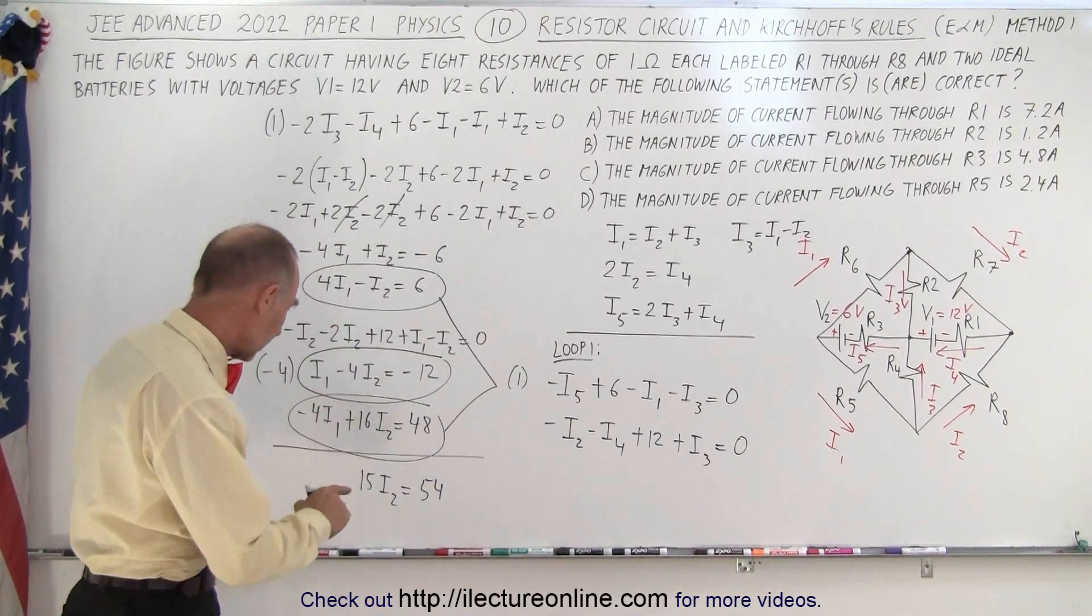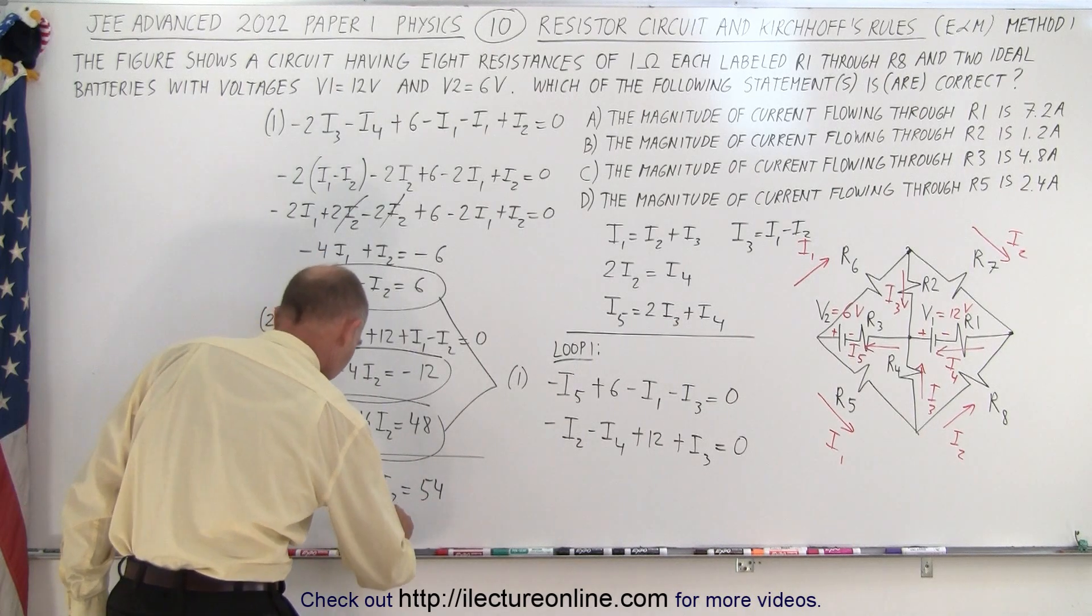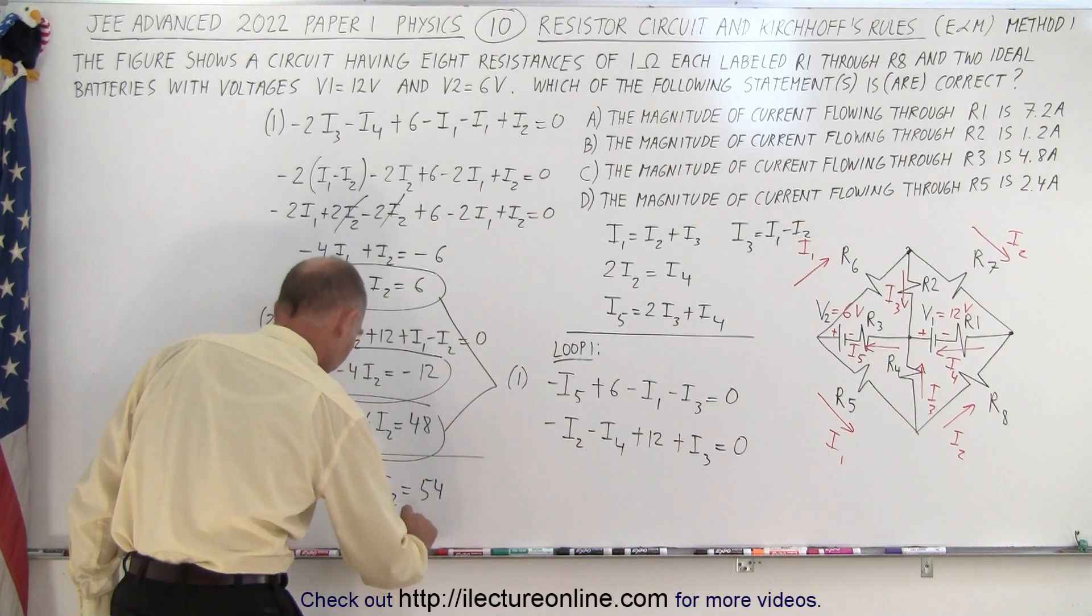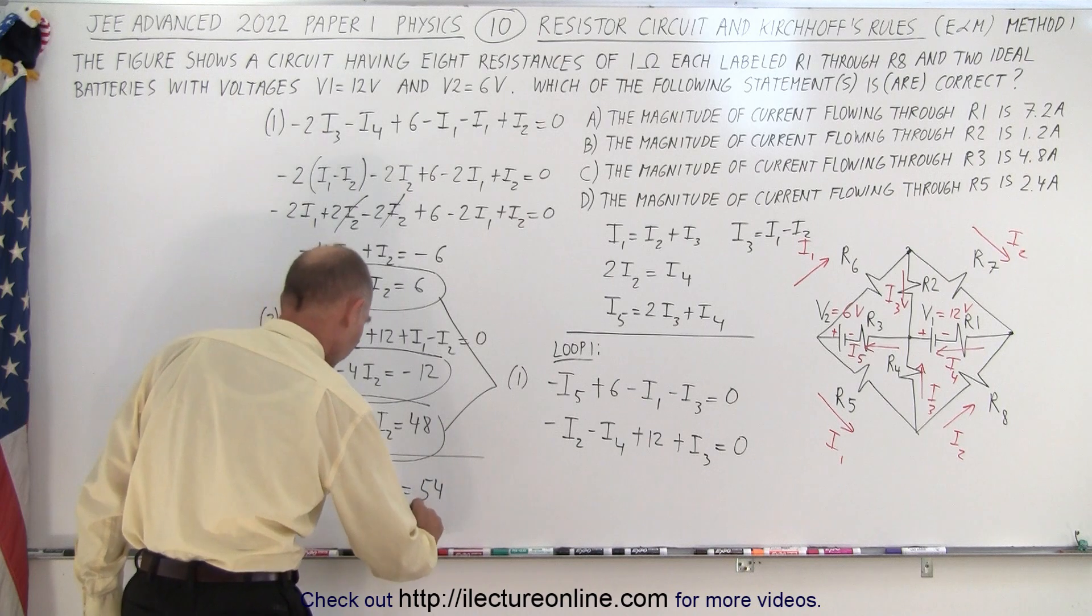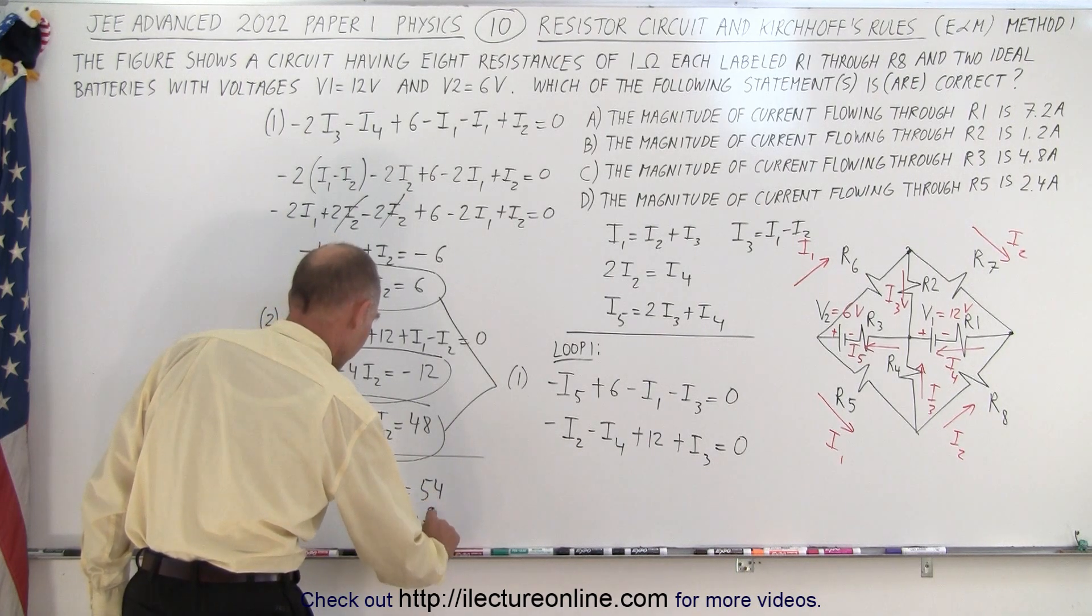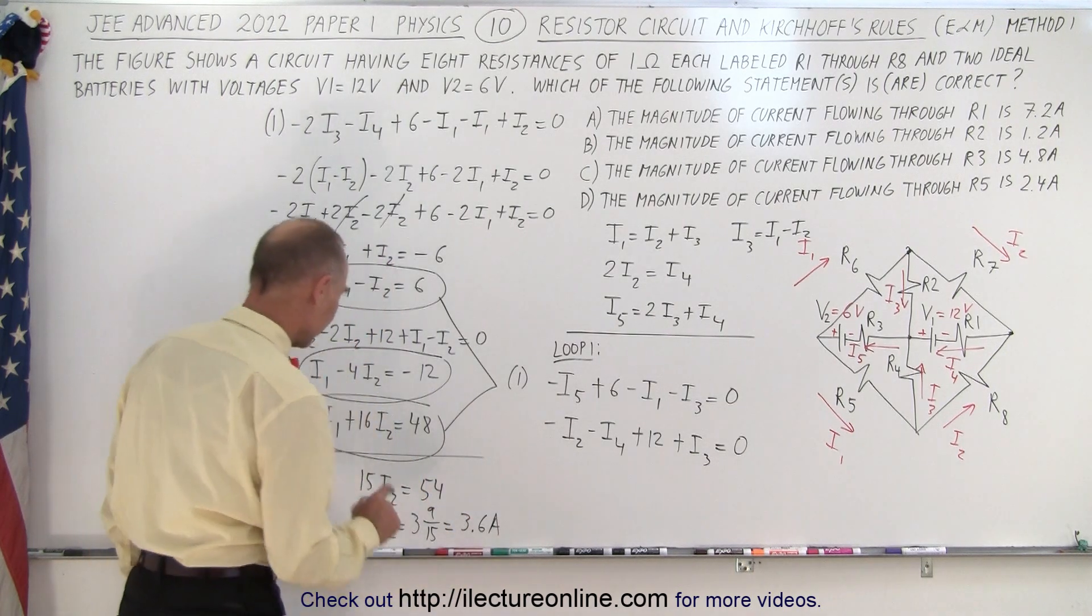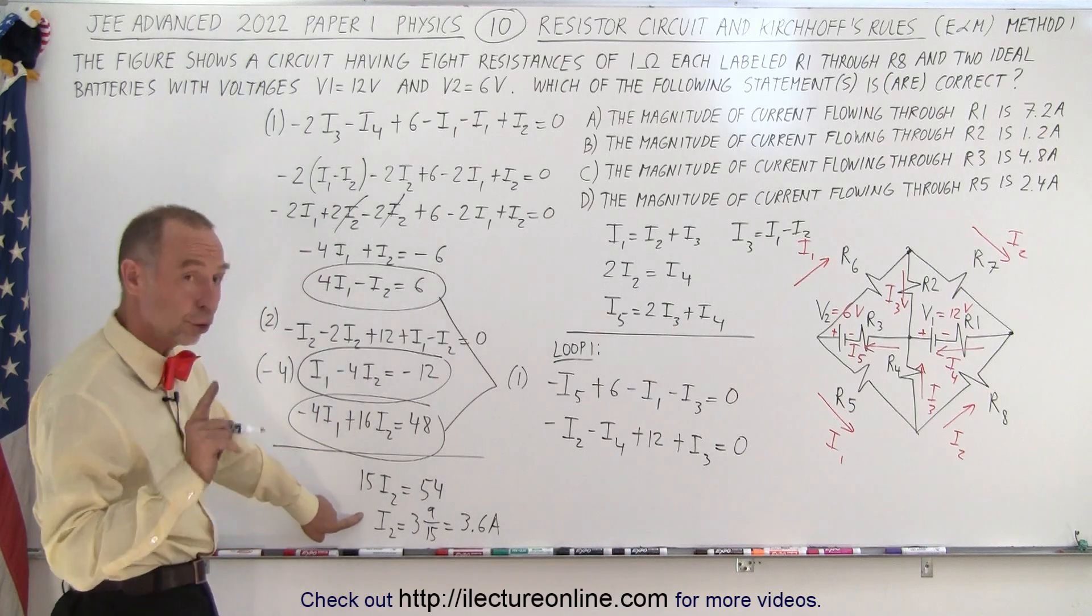Okay, so simplifying that, we divide 54 by 15, so we get I2 is equal to 15 goes into 54 three times. That leaves us with 9 over 15, which is equal to 3.6 amps. So now we have a value for I2.